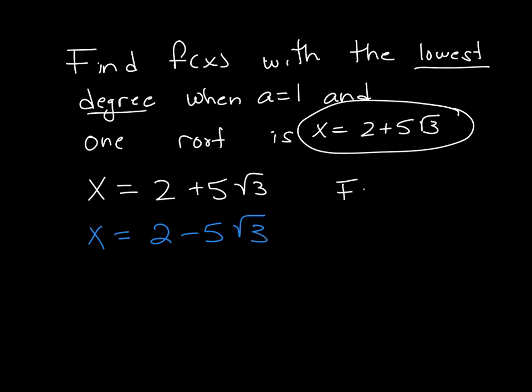We need to both turn these terms into factors. So to turn that into factors, I just move the 2 to the other side, and I am left with x minus 2 minus 5 square root of 3.